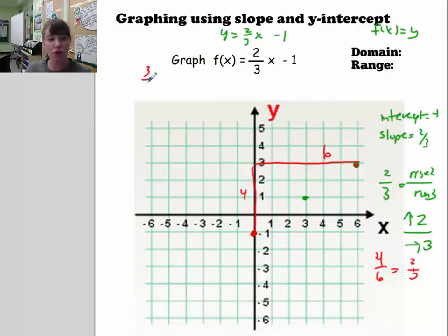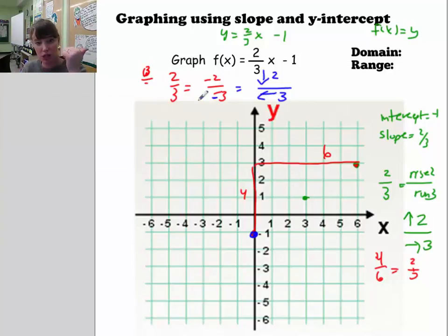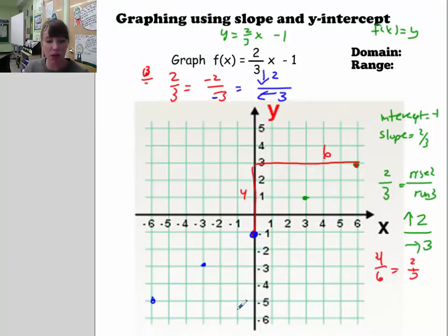Also remember that 2/3 is the same as negative 2 over negative 3. So from the original y-intercept, I could go down 2 and left 3 — a negative rise means going in a negative vertical direction, and a negative run means going left. So going 1, 2 down and 1, 2, 3 left gives another point. Notice that all these points are collinear — even going down 4 and left 6 gives a point on the same line.